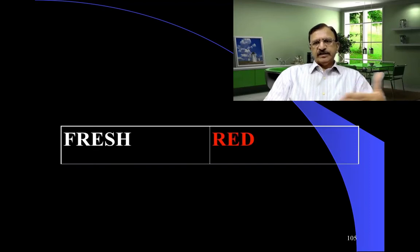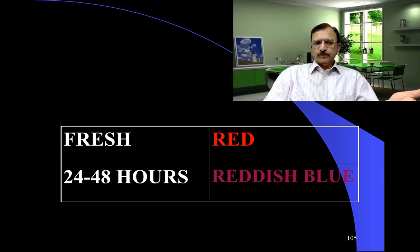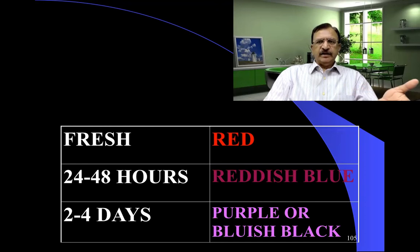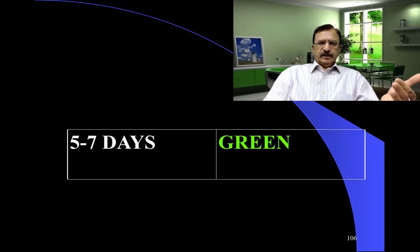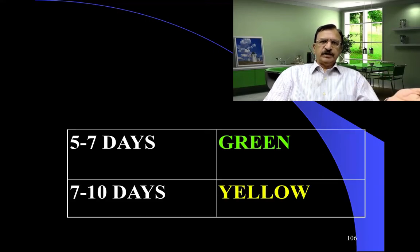Fresh, the bruise appears red. Then after 24 to 48 hours it starts becoming reddish blue. In two to four days it becomes purple or bluish black in color. Then in five to seven days it turns green or greenish brown, and then in seven to ten days it is yellow. After that it fades away.